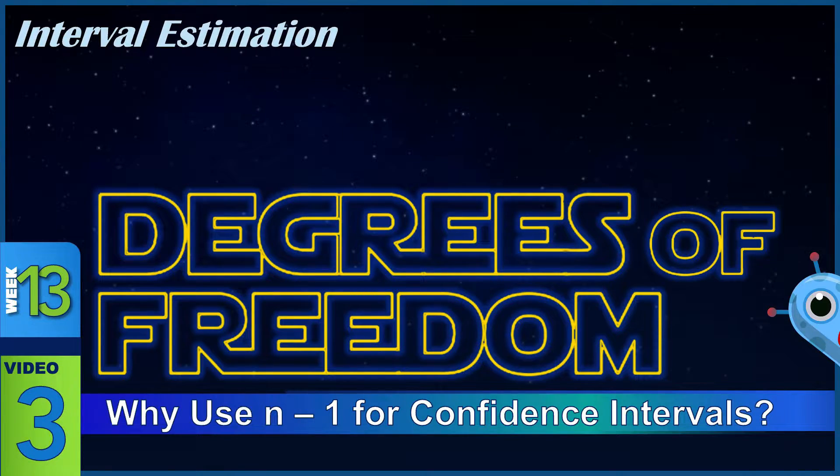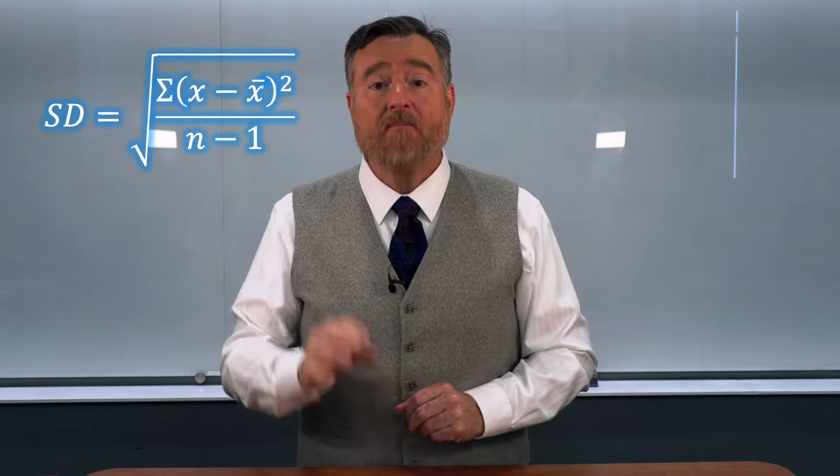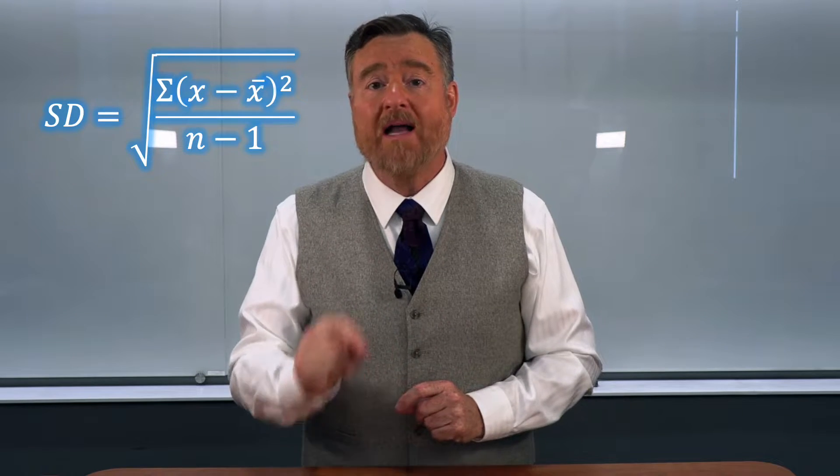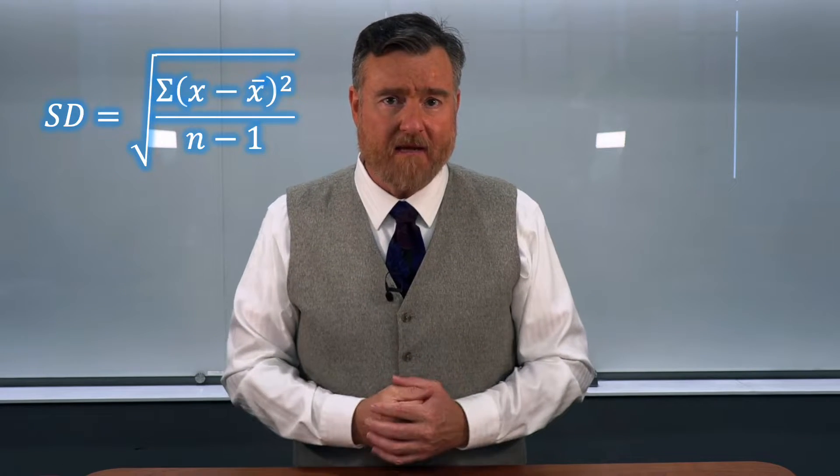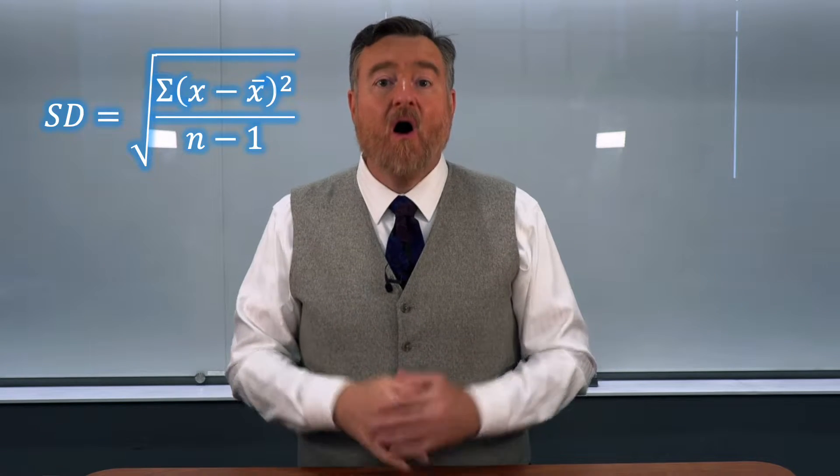When we calculate confidence intervals, you will notice that we use not the full sample size, but the sample size minus 1 in the denominator of the formula. You will see this written as n minus 1. Why do we use n minus 1 when we calculate confidence intervals?